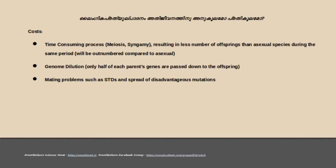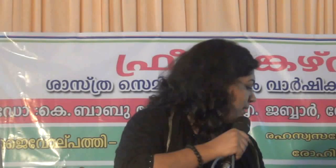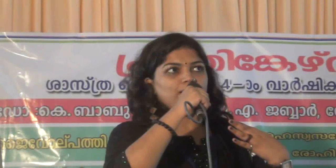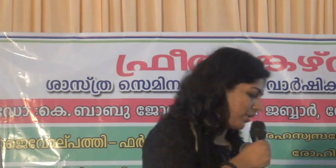There is genome dilution — one parent transfers only half of their genes to offspring. There are mating problems, genetic mixing issues, diseases, and mutations. These are all responses that represent costs of sexual reproduction.